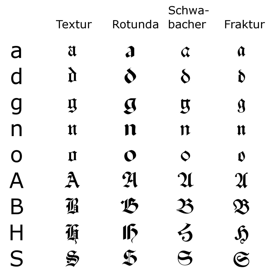One difference between Fraktur and other blackletter scripts is that in the lower case o, the left part of the bow is broken but the right part is not. In Danish texts composed in Fraktur, the letter ø was already preferred to the German and Swedish ö in the 16th century.